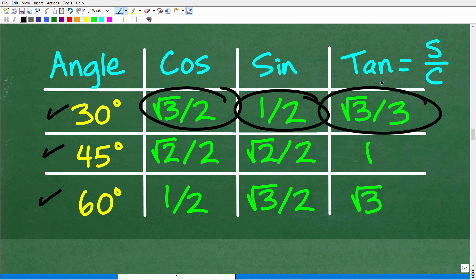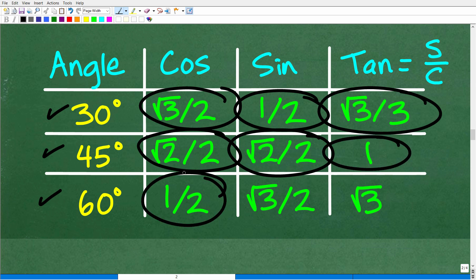So 45 degrees, the cosine of 45 degrees is √2/2. The sine is the same as the cosine, not surprisingly enough. √2/2, and then the tangent of 45 degrees is 1. The cosine of 60 degrees is 1/2. The sine of 60 degrees is √3/2, and the tangent of 60 degrees is √3.